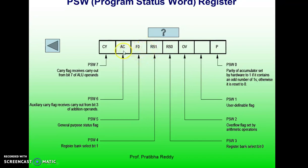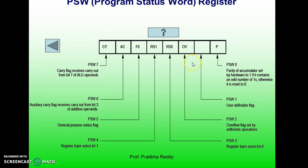PSW6 is the auxiliary carry flag (AC), which is set when there is a carry out from bit 3 of the addition operands. PSW7 is the carry flag (CY); if the result contains a carry, this flag is automatically set. These are the 8 bits of the PSW, also called the status register of the 8051 microcontroller.